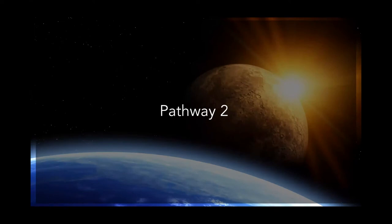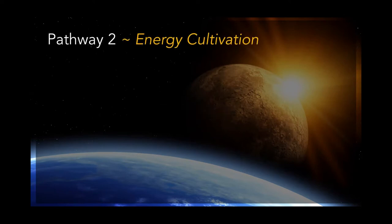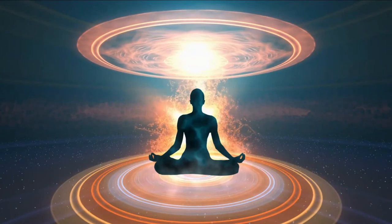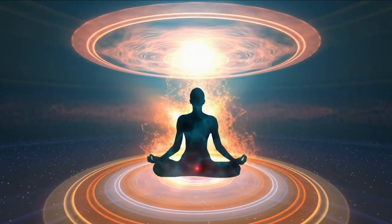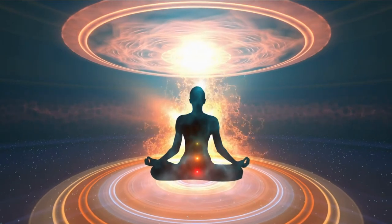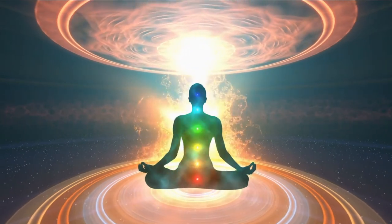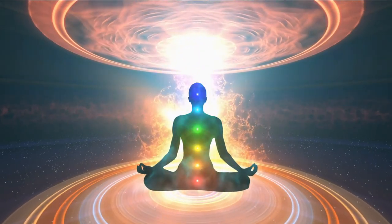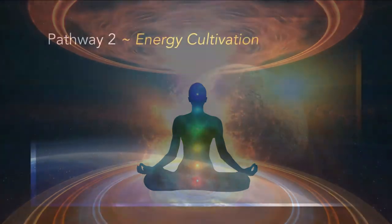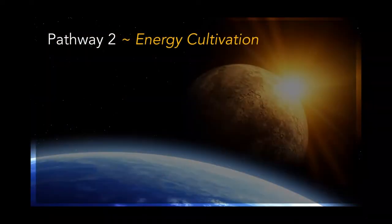Pathway number two is energy cultivation. The previous pathway was direct light accretion — bringing vitality into your body directly through the agency of your willpower using the most powerful technique known throughout history. All avatars that ever attained god-realization knew and understood this — referred to as the lightning path. Pathway number two: let's say you've filled up your cup, your vessel is full of energy — well, you've got to go out into the world then.